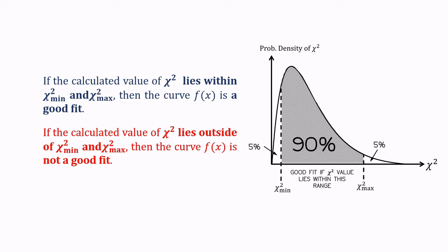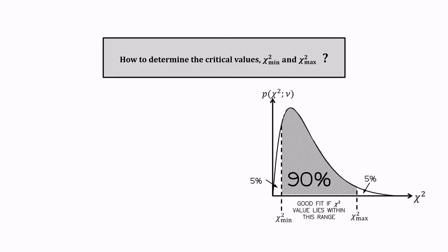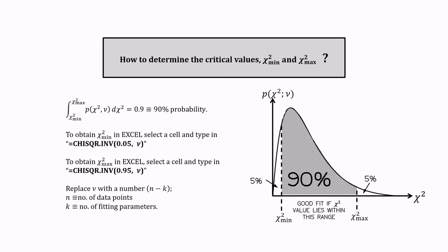So now, how do we determine the critical values of chi squared? Mathematically, the area under the probability density curve between chi squared min and chi squared max is equal to 0.9, and that is 90% of the total area under the probability density curve. These critical values can be easily obtained using the Excel function chi squared inverse.